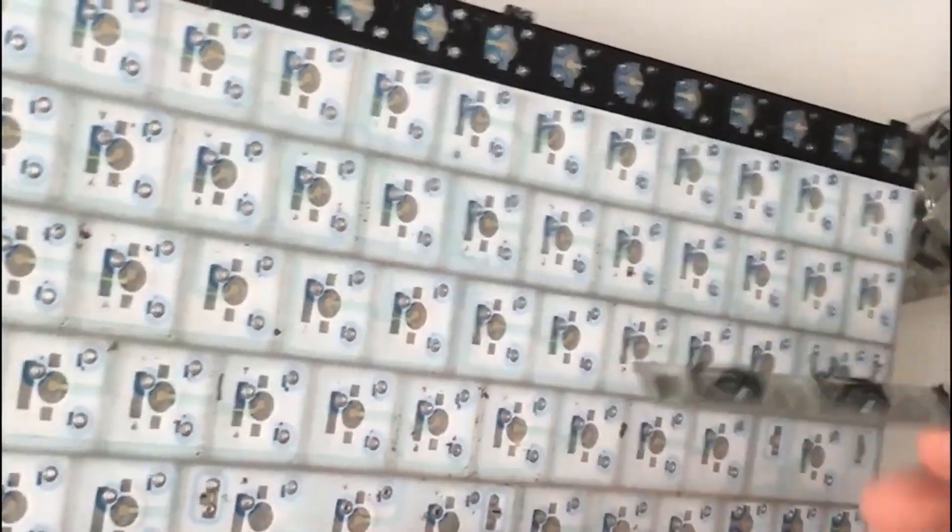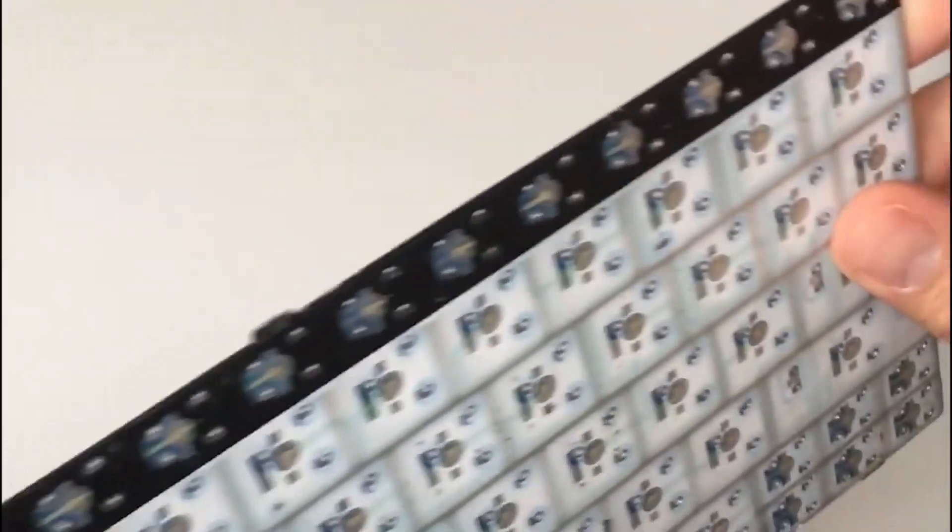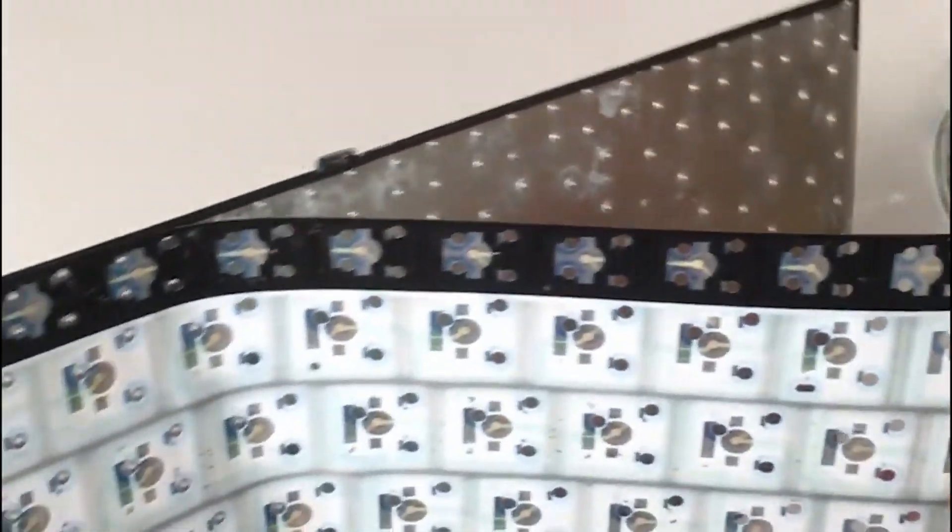Once I remove all the black dots, the keys drop easily and the membrane becomes visible. Now I just remove the membrane from the metal base.